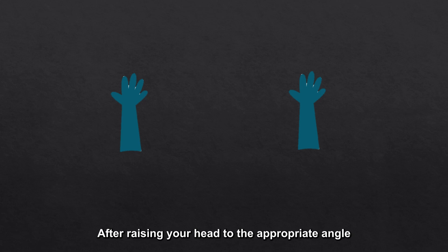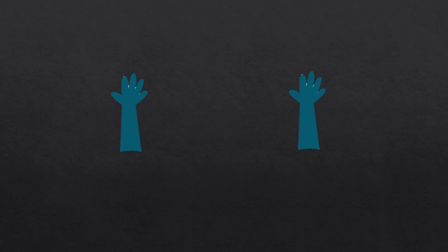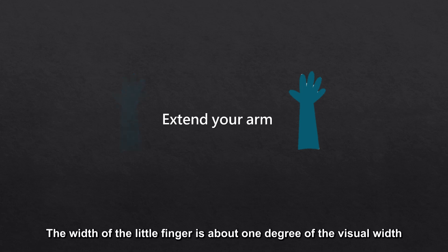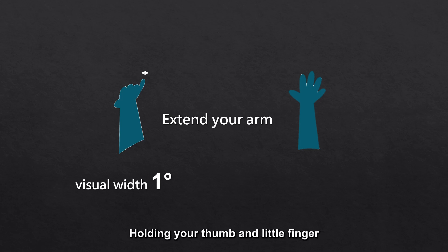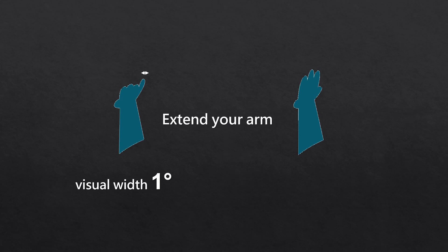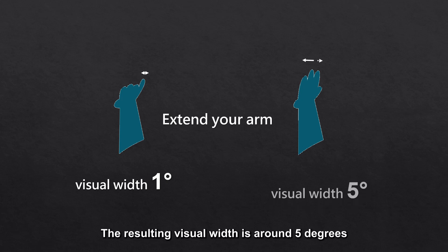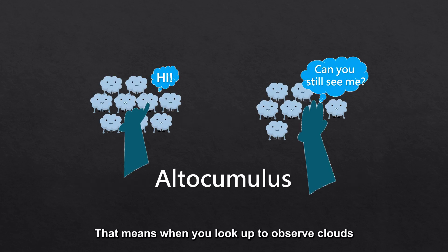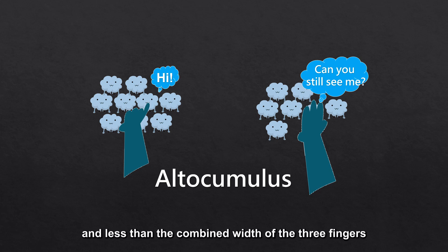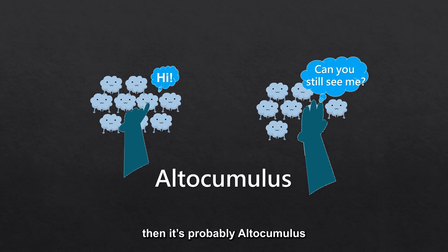After raising your head to the appropriate angle, it's time to start identifying the size of the cloud. We also need to use our hands. This time you have to fully straighten your arms, then put out your little finger. The width of the little finger is about 1 degree of the visual width. Straighten your arm in the same way, holding your thumb and little finger, raise the index, middle and ring fingers and put them together. The resulting visual width is around 5 degrees. That means when you look up to observe clouds, if the width of the observed cloud is greater than the little finger and less than the combined width of the three fingers, then it's probably Altocumulus.